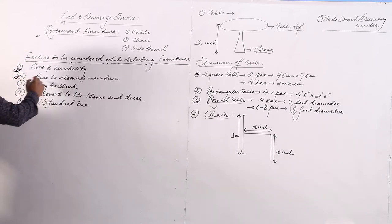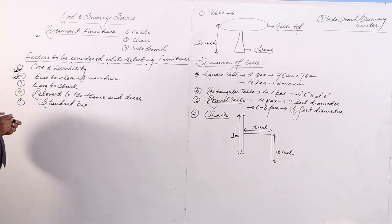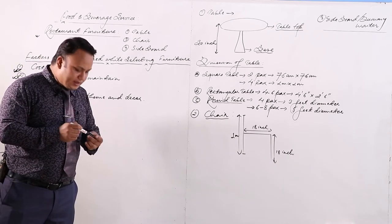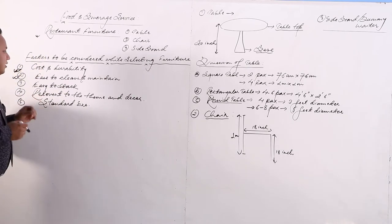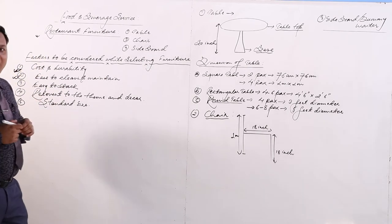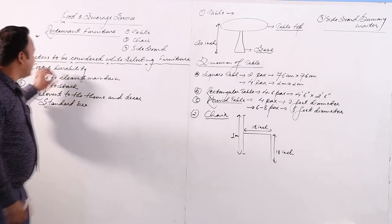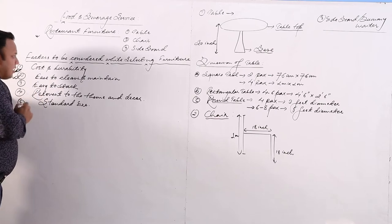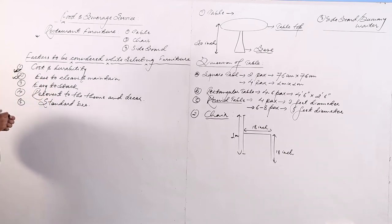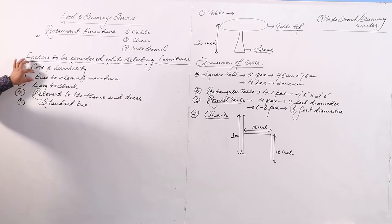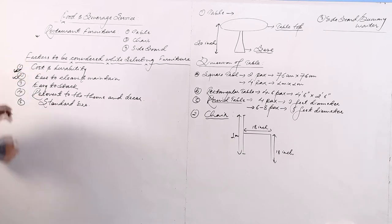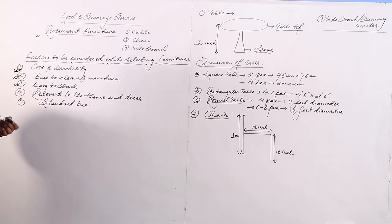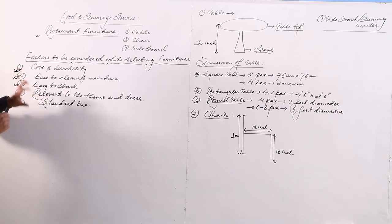The next factor to be considered is that the furniture should be easy to clean. It should be easy to maintain. A restaurant should always be kept in a very hygienic condition — neat and clean. So we should consider whether the furniture can be easily cleaned or maintained. Another factor is that the furniture should be easy to stack when not in use, so it can be stored in the storeroom easily.